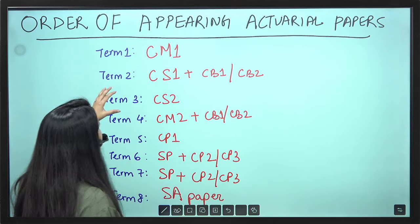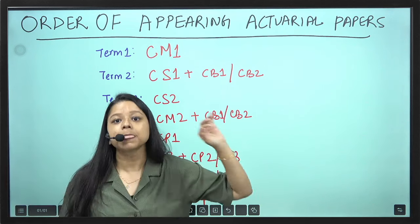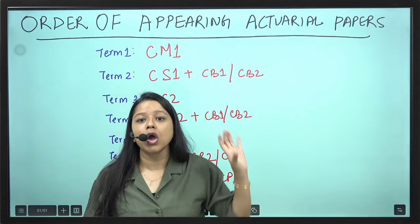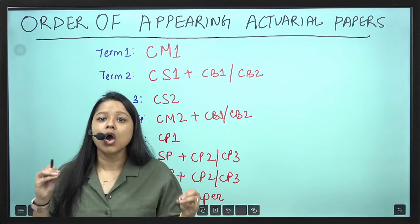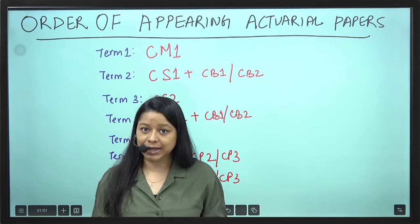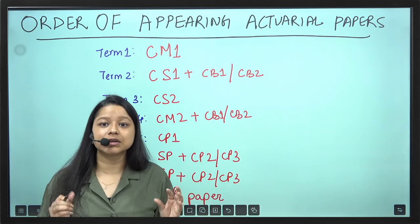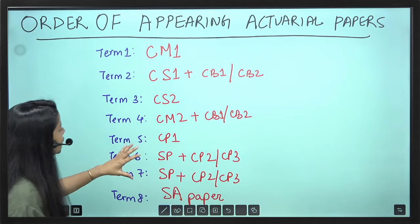Here I've started with CM1 paper. CM1, CS1, CS2, CM2 - these are the four core papers which need approximately 300 hours of study time. And CB1, CB2 approximately need a study hour of 150 hours total study duration.